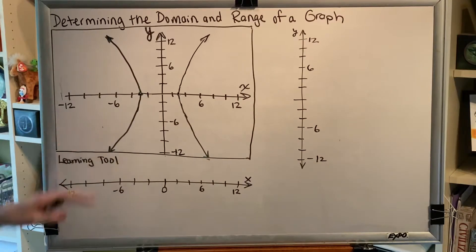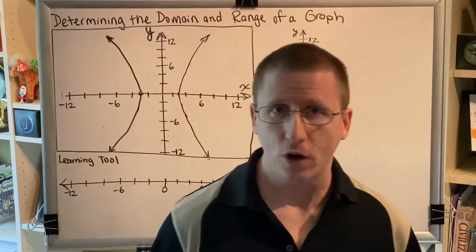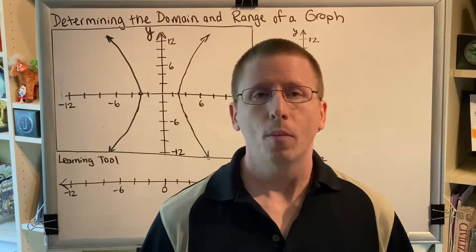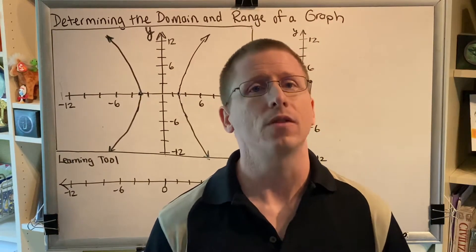The first thing I'd like to point out is this graph does not represent the graph of a function. It fails the vertical line test. So we cannot call this a function, but we can call it a relation. So we're going to find the domain and range of this relation.